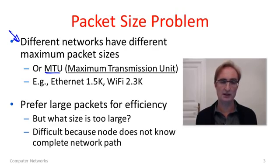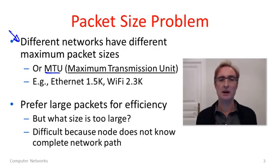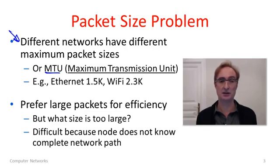As a quick example, Ethernet — the very popular wired technology — permits packets up to about a kilobyte and a half. On the other hand, Wi-Fi permits packets up to about 2.3 kilobytes. And different versions of Ethernet and Wi-Fi actually have different maximum packet sizes. So we're really stuck with this issue.